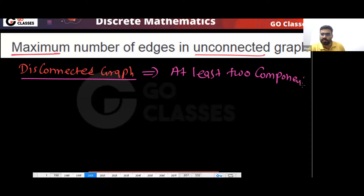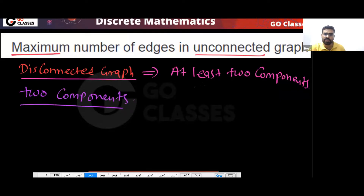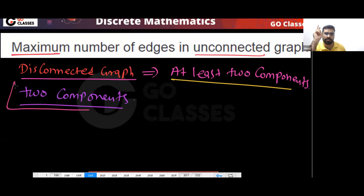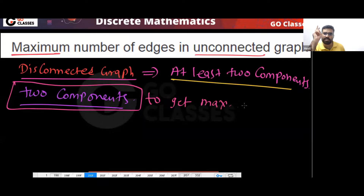If you have two components, what is the maximum number of edges you can get? To get the maximum number of edges, you should have only two components — not three or more. Two components we will have to get the maximum number of edges.